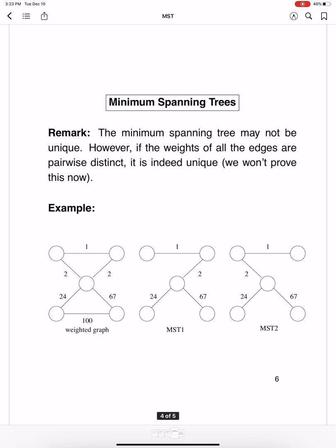So let's consider why the minimum spanning tree may not be unique. So let's consider this weighted graph here. And in this weighted graph, we have two minimum spanning trees, MST1 and MST2. And you will see that the weights of both these spanning trees are the same.